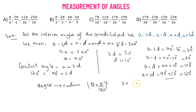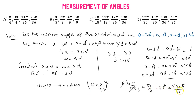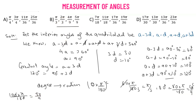Converting each angle: 60 degrees times pi over 180 gives pi over 3 radians. Then 80 degrees times pi over 180 gives 4pi over 9 radians. Similarly, 100 degrees times pi over 180 gives 5pi over 9 radians. And 120 degrees converts to 2pi over 3 radians. This matches option B, which is the correct answer.